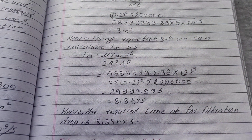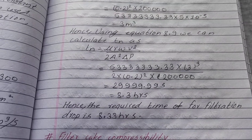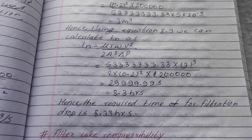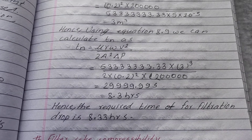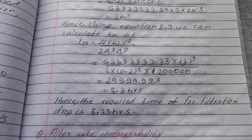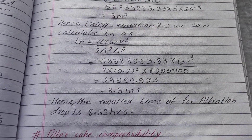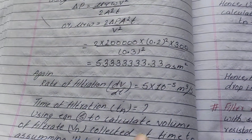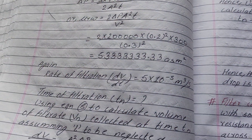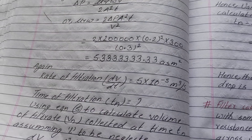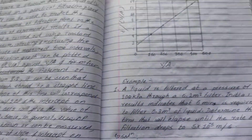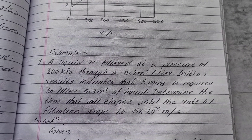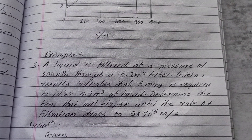Substituting the values with the computed μrw, the highest condition gives a liquid life filter time of 8.33 hours. The rate of filtration is confirmed as 5×10⁻⁵ m³ per second, and we can see the result in the filter.